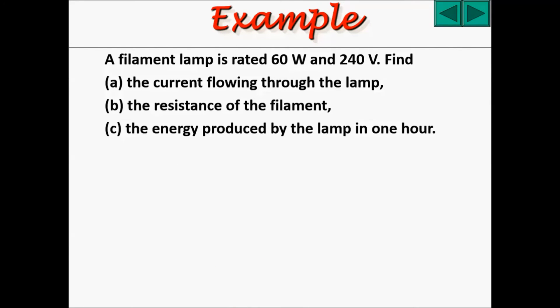Let's try our next example. A filament lamp is rated at 60 watts and 240 volts. Find the current flowing through the lamp, the resistance of the filament, and the energy produced by the lamp in one hour.